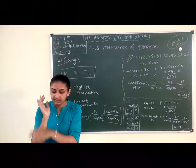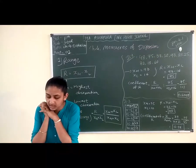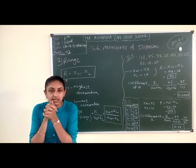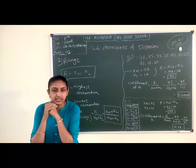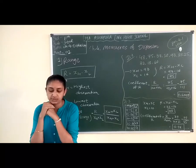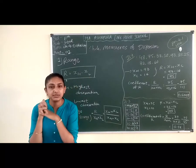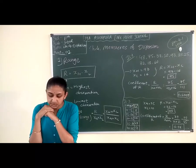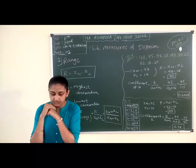What is the meaning of range? The difference between the highest and lowest observation of the data is called range, and it is denoted by the symbol capital R. Range R is equal to XH minus XL, that is highest observation minus lowest observation. Range R is an absolute measure of observation having the same unit of measurement as that of the observation.